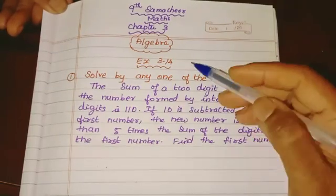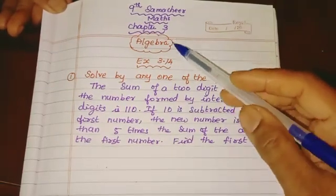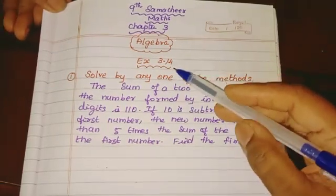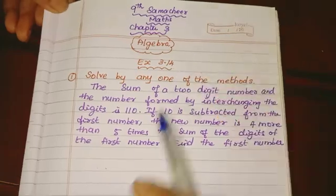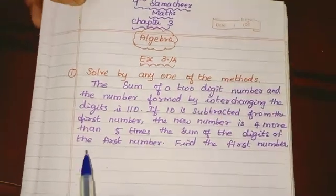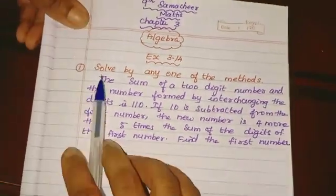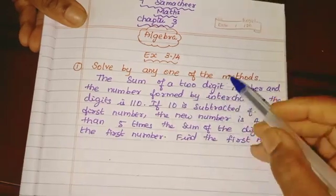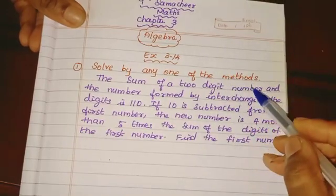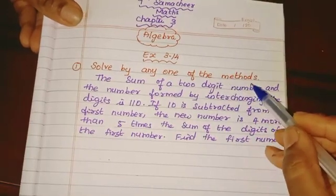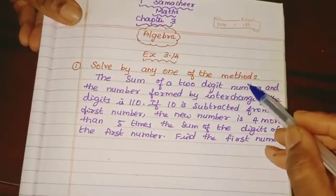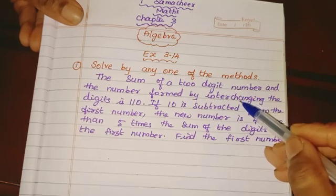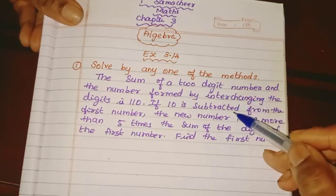Students, in the 9th Summachil Max, Chapter 3, Algebra, Exercise 3.14. Solved by any one of the methods. We have three methods to solve: substitution method, elimination method, cross multiplication method.